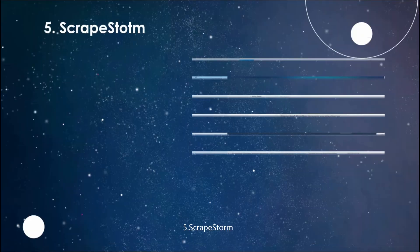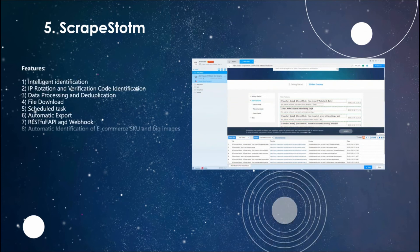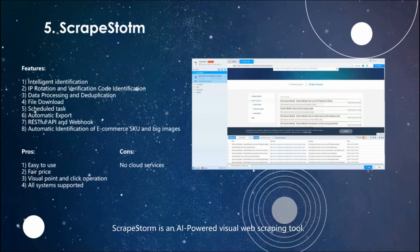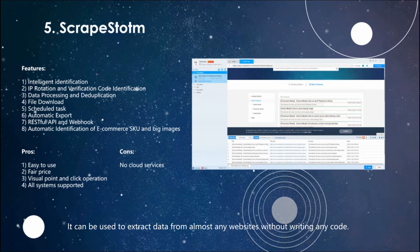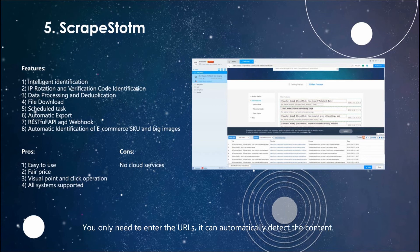5. ScrapStorm. ScrapStorm is an AI-powered visual web scraping tool. It can be used to extract data from almost any website without writing any code. The biggest advantage of this software is its simplicity of use. You only need to enter the URLs and it can automatically detect the content. It also has a free version that includes most of the features.